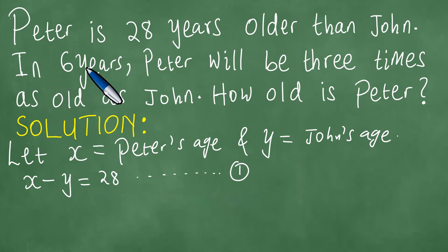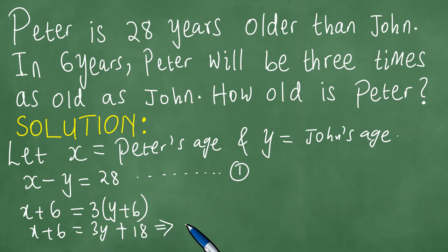In six years, Peter will be three times as old as John. So in six years, Peter's age will be x plus 6. But it's going to be three times as old as John, so it means that we must multiply John's age by 3 and it is understood to be in six years, which means x plus 6 equals 3y plus 18.